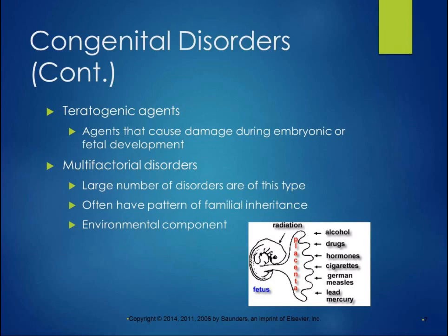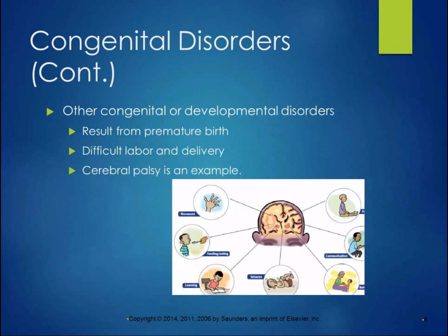A large number of disorders are multifactorial, meaning there's a pattern of familial inheritance and an environmental component that triggers it. Multiple sclerosis and Parkinson's are multifactorial disorders with a genetic predisposition and an environmental component that potentially triggers disease evolution. Other congenital or developmental disorders result from premature birth or difficult labor and delivery — cerebral palsy is an example. Developmental disorders are non-progressive damage to the developing brain and cannot be passed to the next generation, whereas genetic congenital disorders can be.